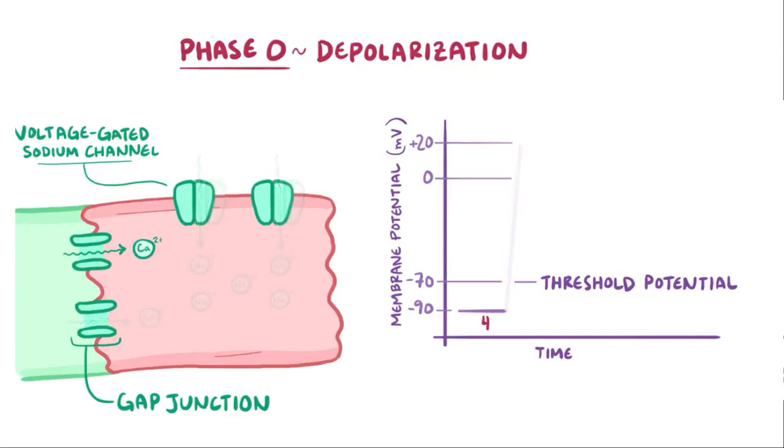Now, if only a few ions had leaked through from the neighboring cell, and the membrane potential didn't get to the threshold potential of negative 70 millivolts, then those voltage-gated channels wouldn't open, and there'd be no depolarization. Essentially, there's nothing in between, which is why we say an action potential is an all-or-none process.